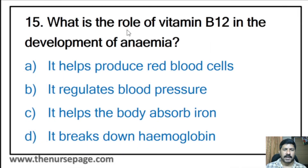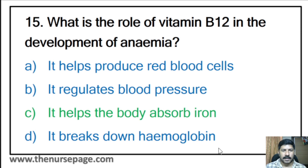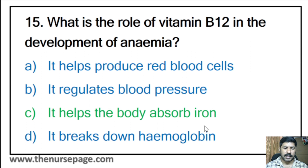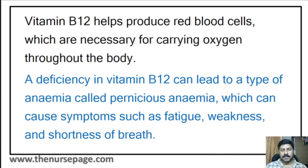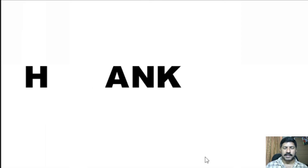Fifteenth question: What is the role of vitamin B12 in the development of anemia? It helps produce red blood cells, it regulates blood pressure, it helps the body absorb iron, or it breaks down hemoglobin? Vitamin B12, along with intrinsic factor, helps the body absorb iron from the stomach and helps produce red blood cells. A deficiency in vitamin B12 can lead to pernicious anemia, causing symptoms such as fatigue, weakness, and shortness of breath.